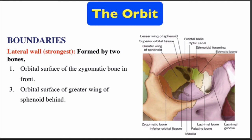The lateral wall of the orbit is the strongest wall, formed by two bones: the orbital surface of the zygomatic bone in front, and the orbital surface of the greater wing of the sphenoid bone behind.